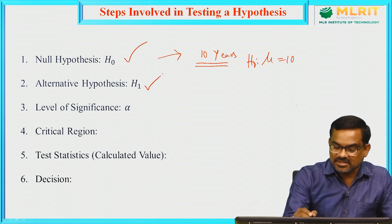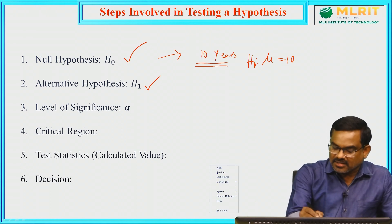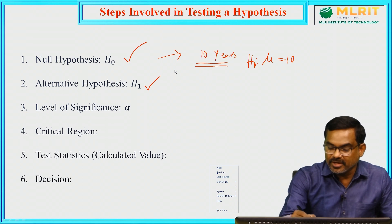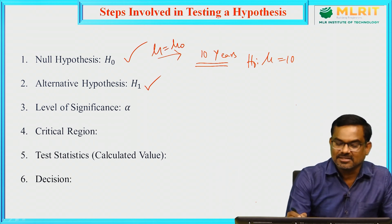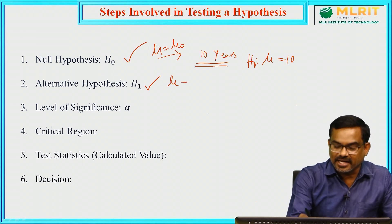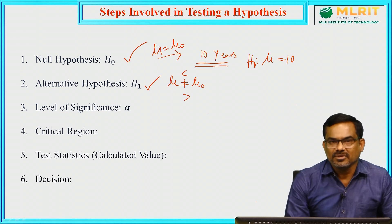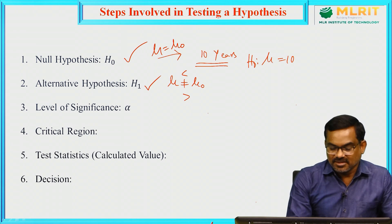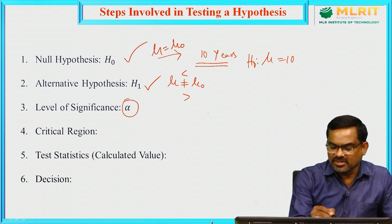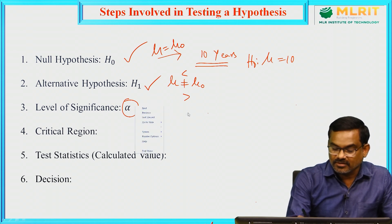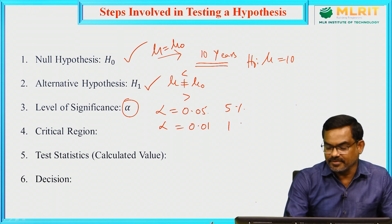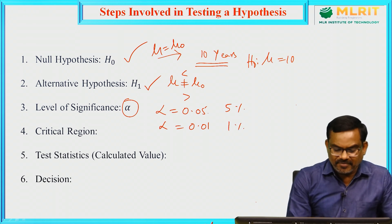The second step is the alternative hypothesis. We consider any hypothesis other than the null hypothesis as the alternative hypothesis. If null hypothesis is mu equal to mu naught, then the alternative hypothesis will be one of three types: mu not equal to mu naught, less than mu naught, or greater than mu naught. The third step is the level of significance, where we consider the value of alpha. The possible values of alpha are 0.05 and 0.01, meaning 5 percent and 1 percent level of significance. The fifth step involves a test statistic, and using this we find the calculated value.